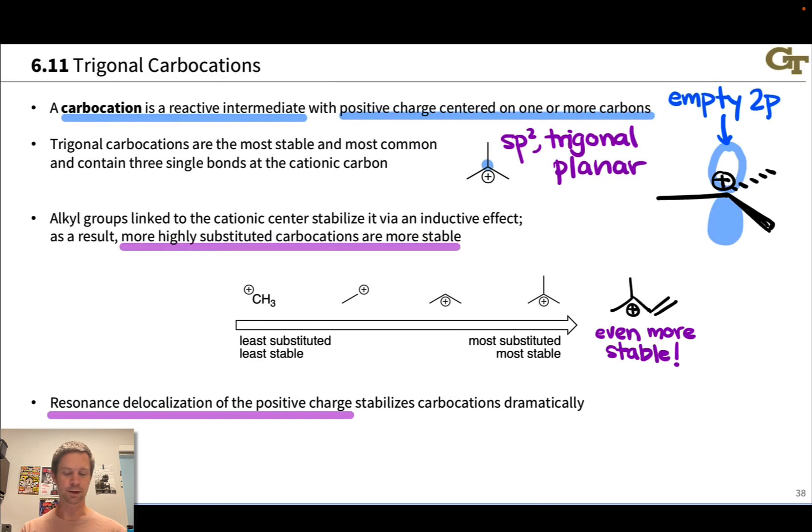Let me back up really quickly and just mention something about substitution pattern and cation stability. Methyl cations and primary cations. So here we have a methyl cation, Me+, right? And here we have a primary cation with only one carbon group linked to the cationic center. These are so unstable that they're not observed in organic reaction mechanisms.